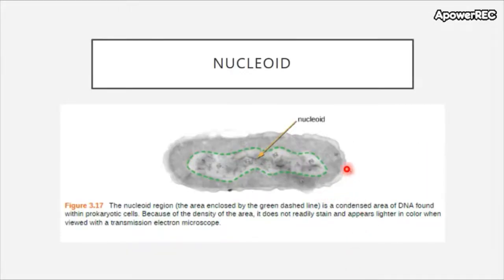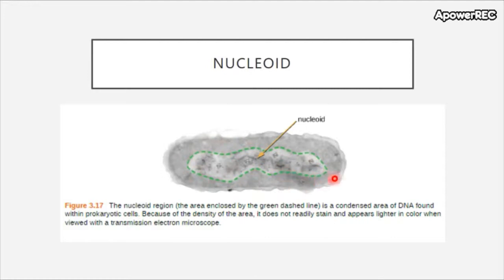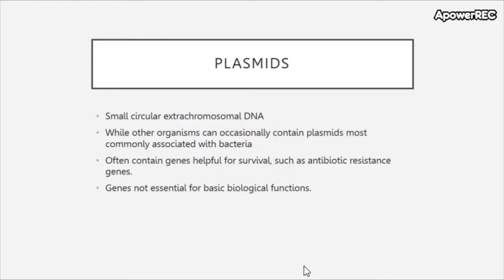If you're viewing bacteria with a light microscope you probably won't see a nucleoid, so if you see a nucleus you're probably looking at a eukaryote. Obviously bacteria don't have nuclei, but sometimes it's hard to tell the difference under the resolution that light microscopes provide.